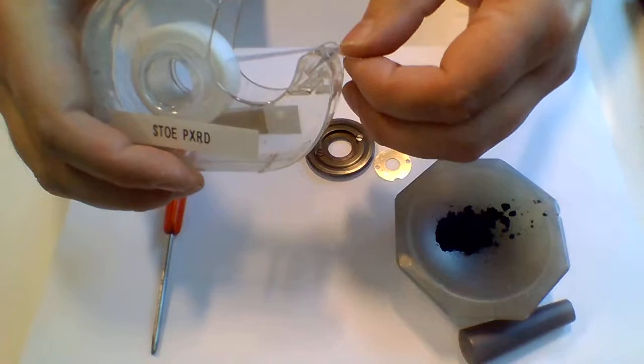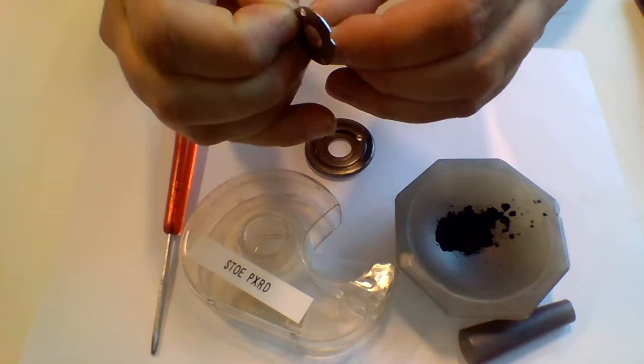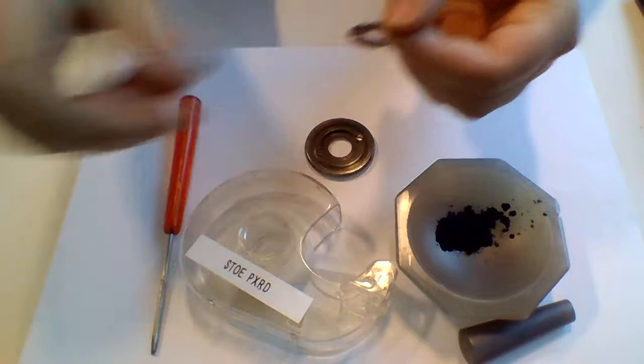So you take an appropriate sized piece and stick it to the ring. And now you have a sticky surface here. You simply take a small spatula.